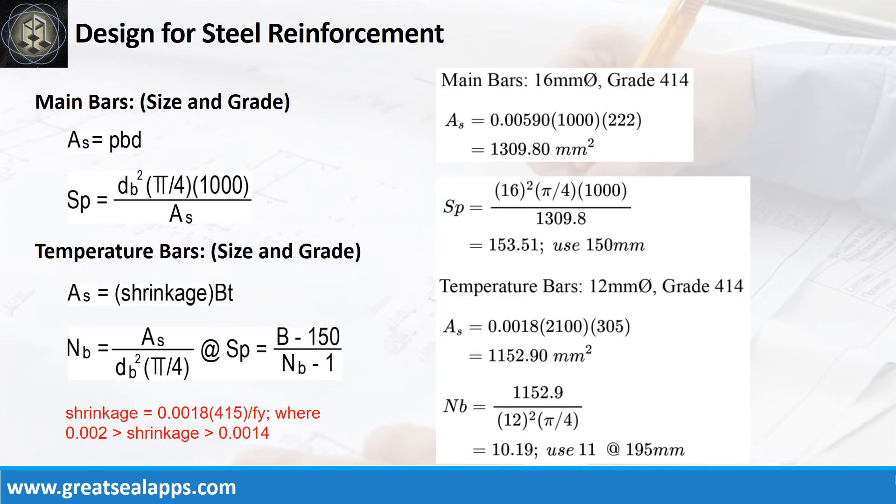Given RAW equals 0.0059, B equals 1000mm, and D equals 222mm. The area of steel for main bars is 1309.8mm2 and the spacing for 16mm bar is 150mm. The area of steel for temperature bars is 1152.9mm2 and the number of bars for 12mm bar is 11.